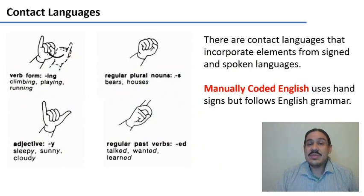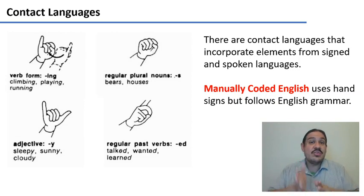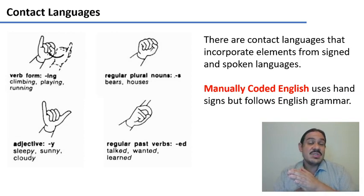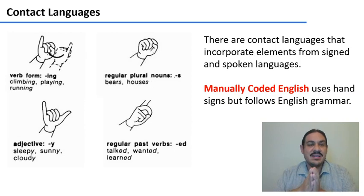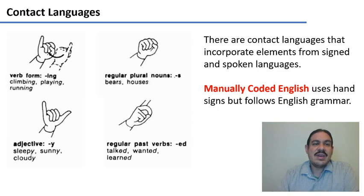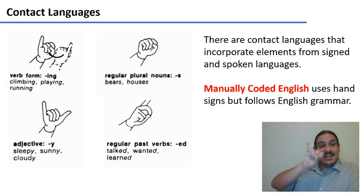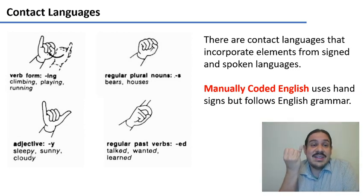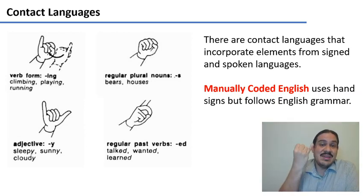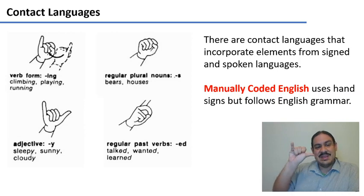When two languages are in contact, there might be intermediate forms between them — kind of like the pidgins and creoles that we studied. There are contact languages between sign and spoken languages. For example, Manually Coded English uses hand signs but follows the grammatical structure of English. So you have a root for the verb 'to climb' expressed with a motion of the hands, and then a sign for the English ending -ing, as in 'climbing.' This one would be the plural; this one would be the adjective.